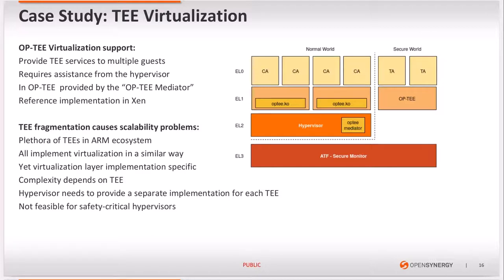OP-TEE refers to the virtualization layer as the OP-TEE mediator, and there is a reference implementation in the Xen hypervisor. In the architecture, two guests issue requests to the secure OS and all requests are relayed through the OP-TEE mediator, which is implemented as part of the hypervisor.